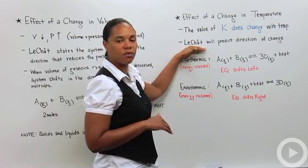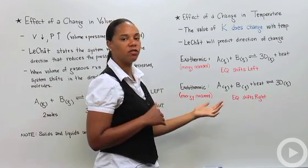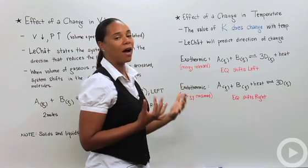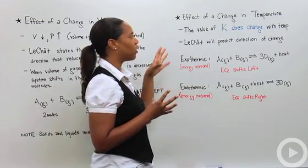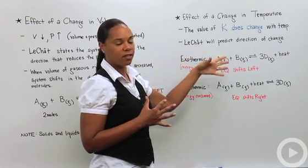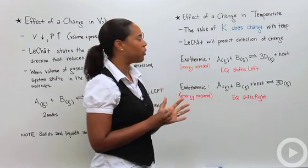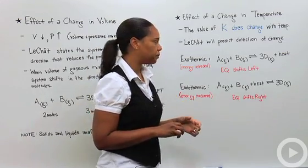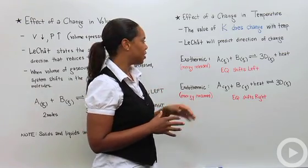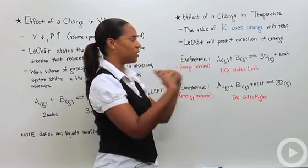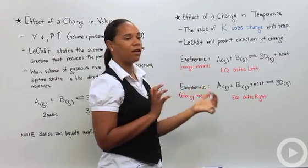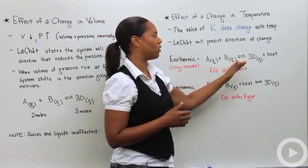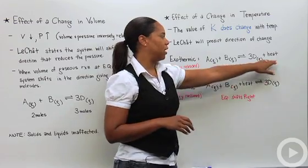Okay, so again, Le Chatelier's principle will predict the direction of change. So whether the equilibrium is shifted forward or whether it's shifted backward. So how do you know that, though? So for a change in temperature, you need to discuss whether or not the reaction is an exothermic reaction or an endothermic reaction. So let's just remember what those mean for a second. So with an exothermic reaction, exo outside, that means that the reaction produces heat. All right, so it goes forward, and as a result of going forward, it produces heat.